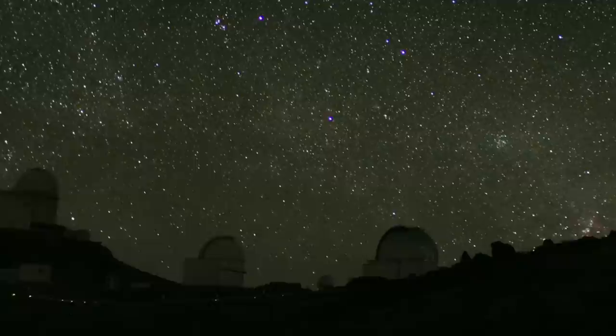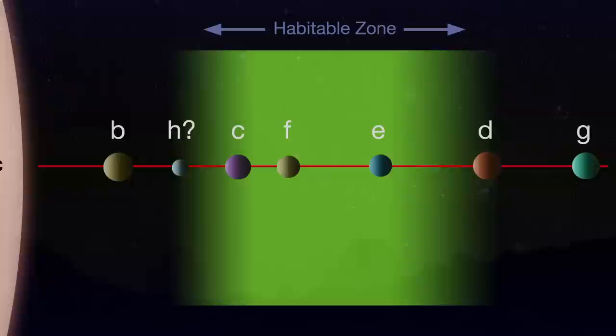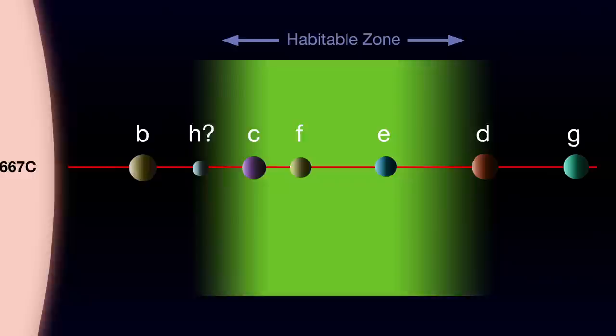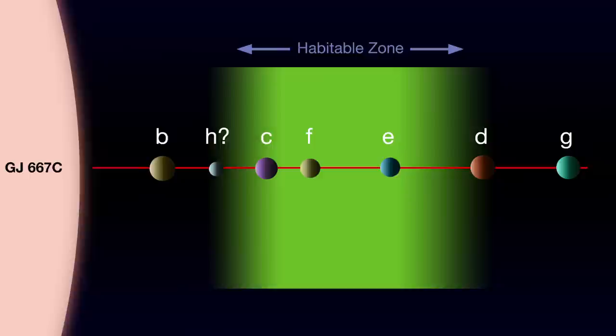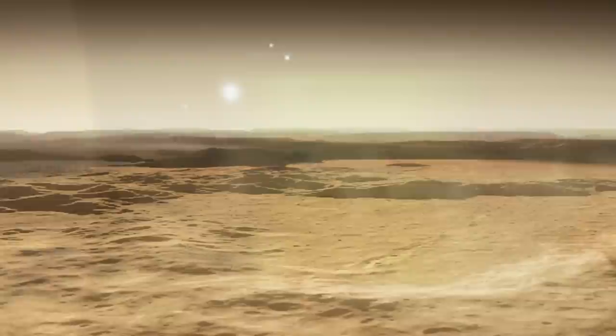By unraveling the pattern of wobbles in the star's light, they have determined that three out of seven planets lie within the habitable zone. The range of distances in which there is enough heat from the star to allow liquid water to flow, but not so much that it would boil it off.